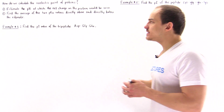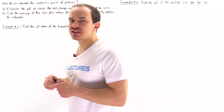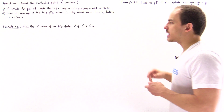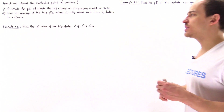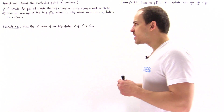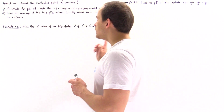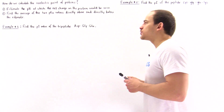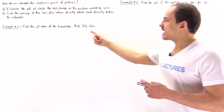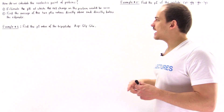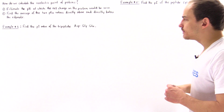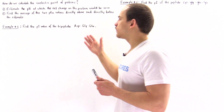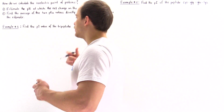To see these two steps in action, let's look at two examples, beginning with example one. Find the PI value, the isoelectric point, of the tripeptide aspartate, glycine, and glutamate. Let's begin by drawing the structure for this tripeptide.